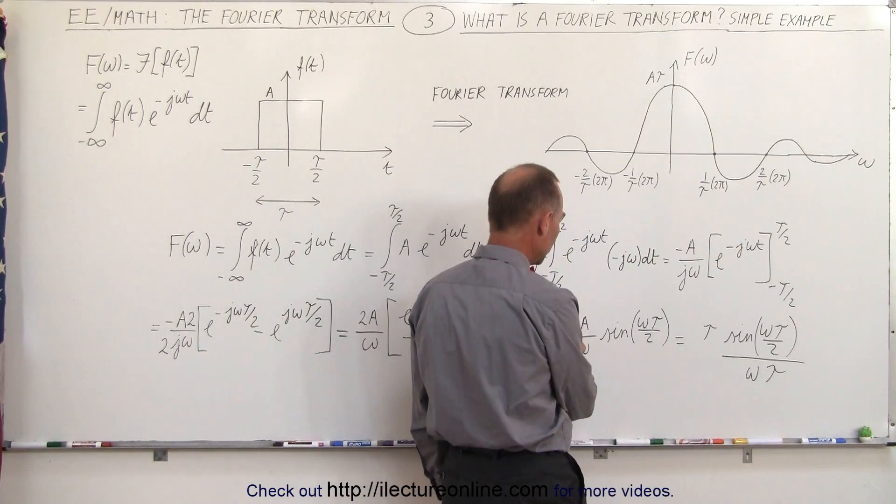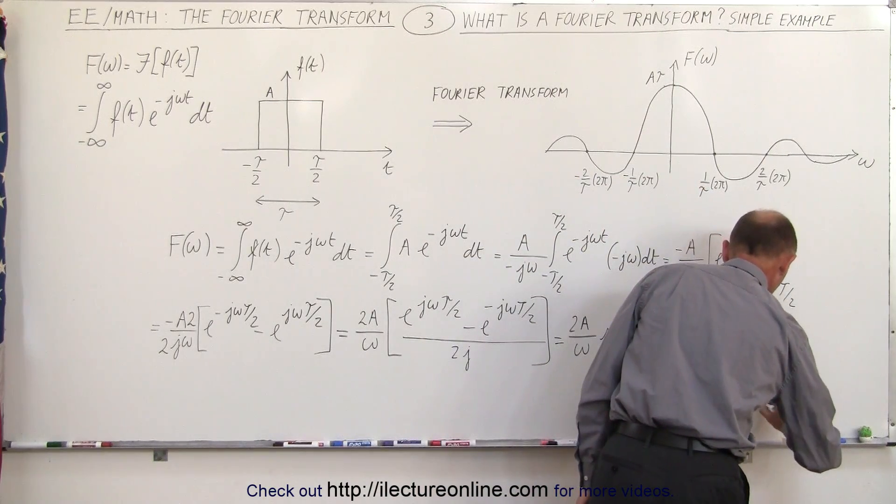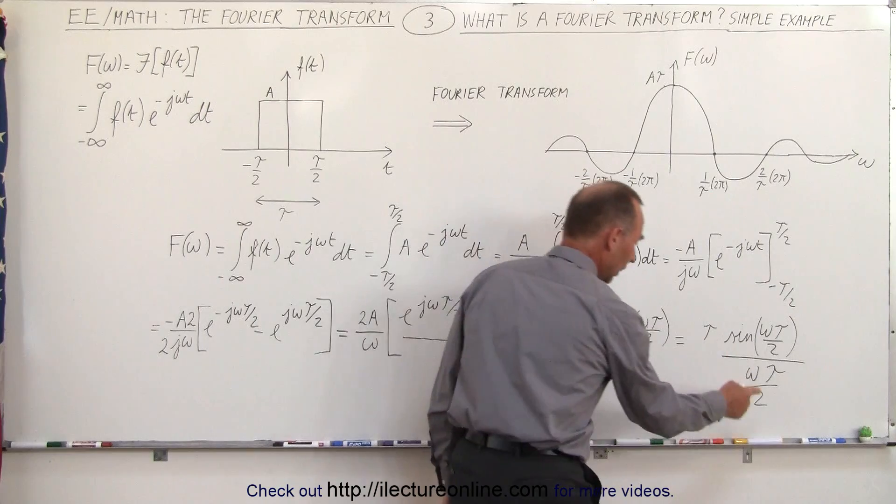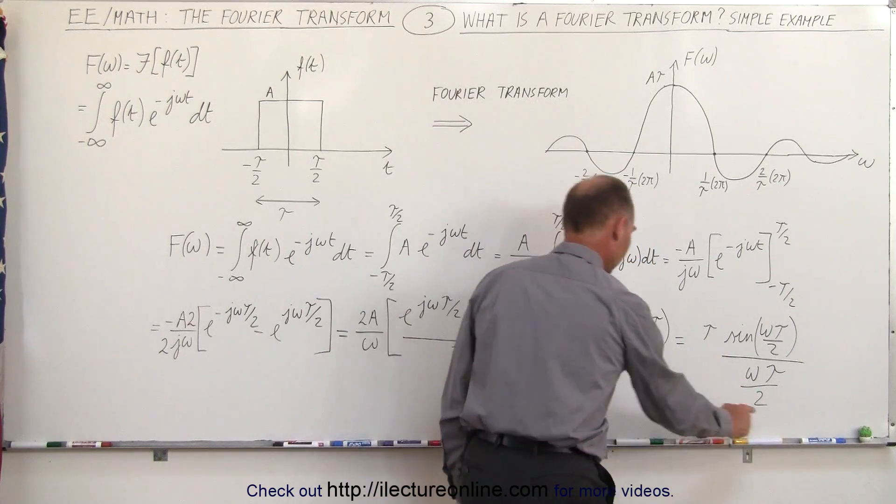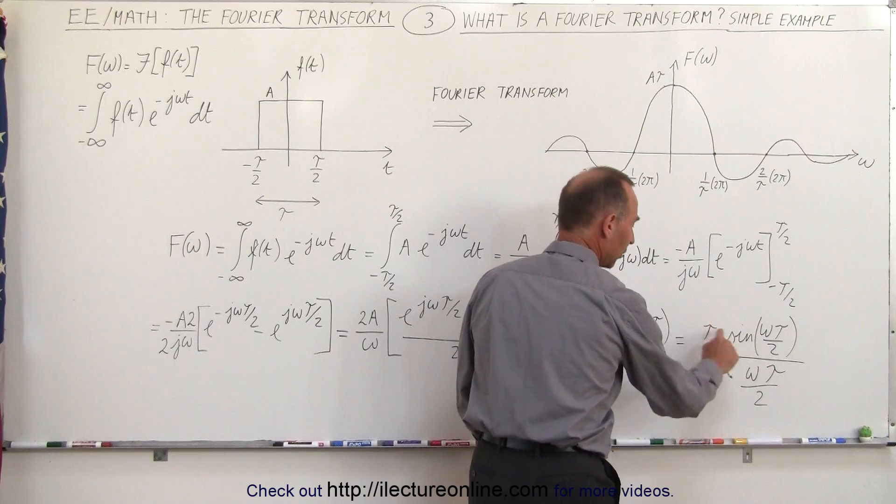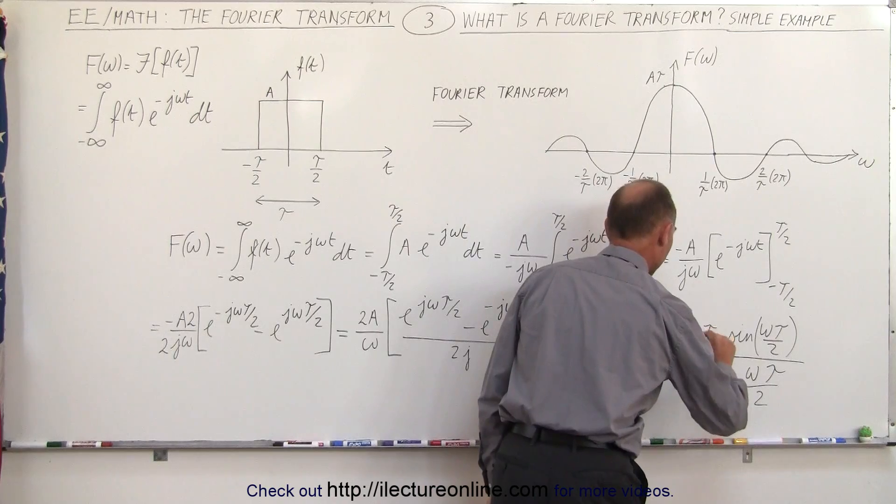Now we have a 2 in the numerator so if we divide by 2 we can pull the 2 down put it over here. So omega is over here, the 2 is over here, I create a tau by multiplying both the numerator and the denominator by tau and finally I can put the A over here.